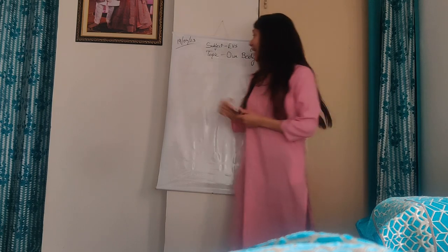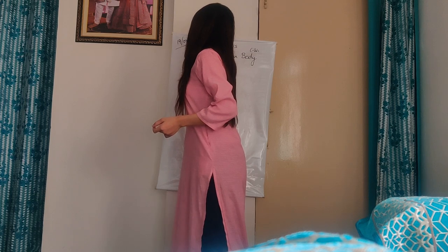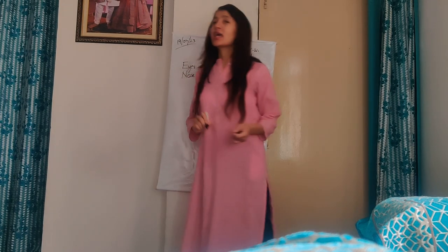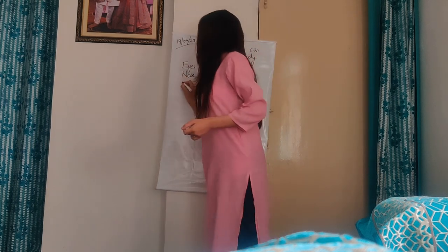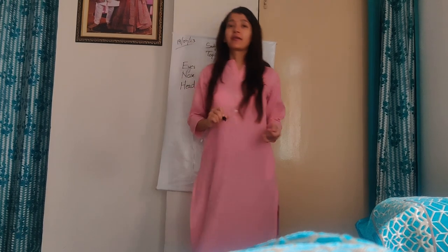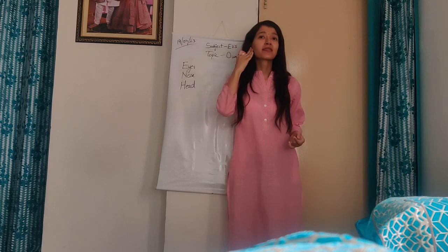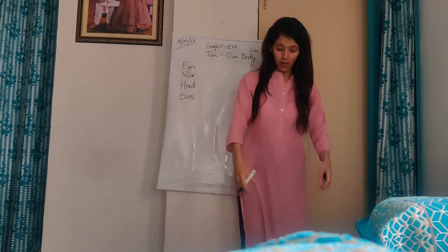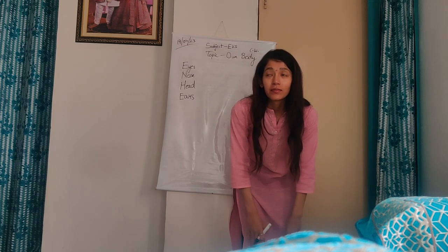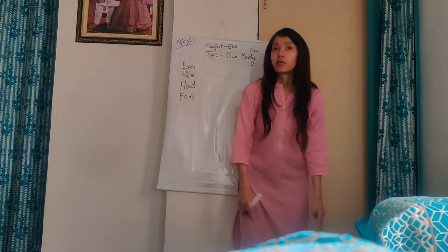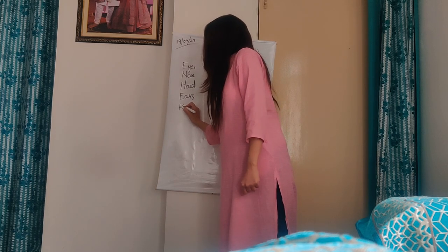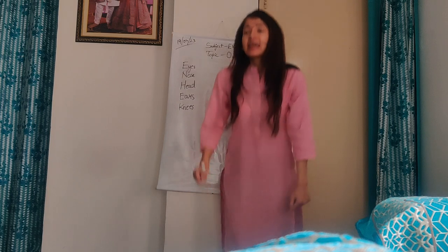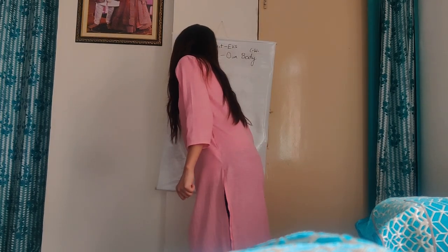You tell me. Very good. Eyes. You tell me. Very good. Nose. Good. Head. H-E-A-D. Head. You tell me. Good job. Ears. What are these? You have listened to the poem — these are knees. What is the spelling of knees? K. K is silent. Knees — K-N-E-E-S. What are these? These are toes. Good job. T-O-E-S. Toes.